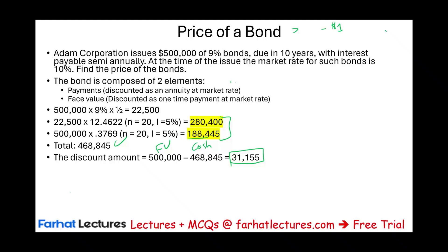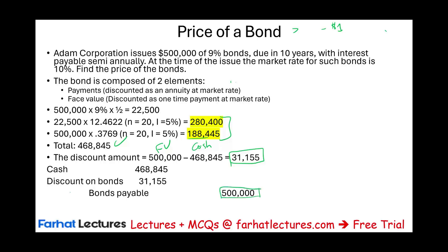Now let's record the journal entry. Adam Corporation will debit cash for $468,845 — the only amount they actually receive. They will credit bonds payable for the full face value of $500,000 because they are responsible for paying back the full amount. The difference is recorded as a debit to discount on bonds of $31,155, which is a contra liability to bonds payable. This discount will be amortized with interest expense, as we'll see later when we discuss amortization.